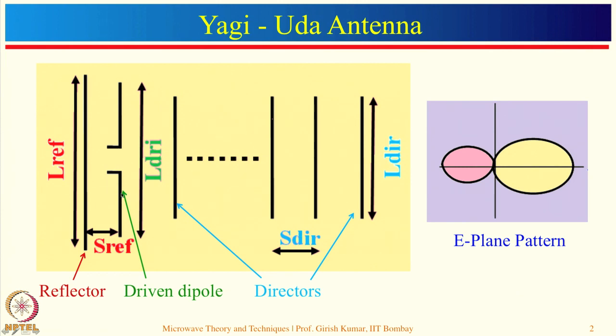If you put a reflector behind the dipole antenna, the radiation from the dipole will reflect back and go in that particular direction. For a lambda/2 dipole antenna, gain will be approximately 2 dB. If you put a reflector behind it at an approximate distance of lambda/4, gain will be of the order of 5 dB. If you then add just one director, the total aperture increases by 2 times, so ideally the gain may increase by 3 dB.